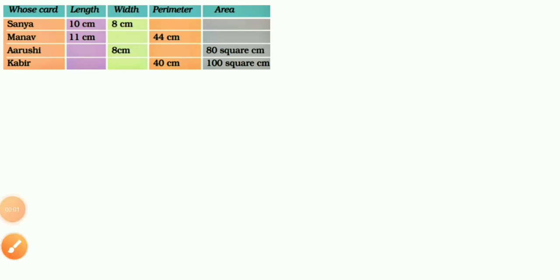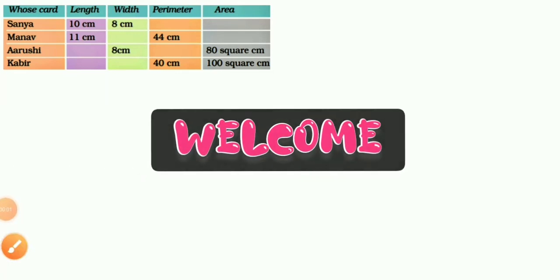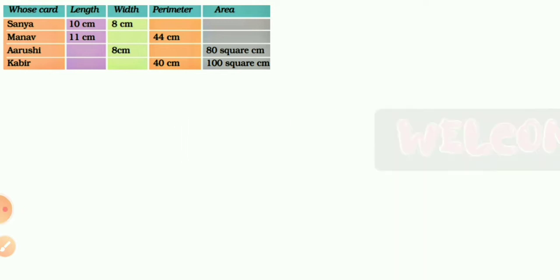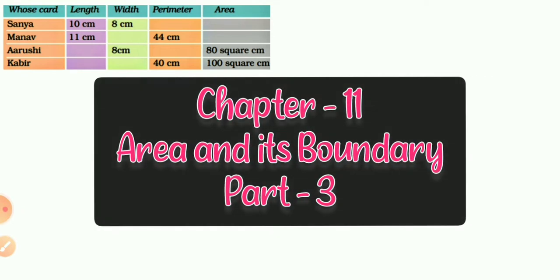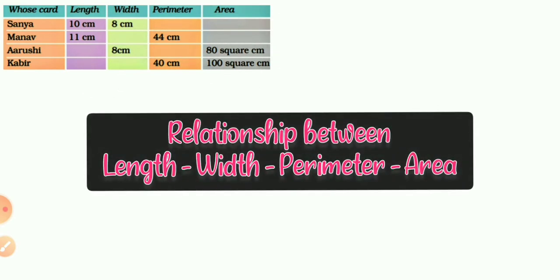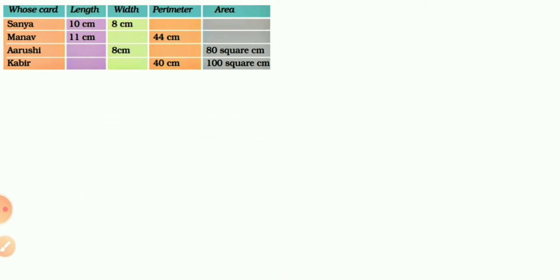Hello dear students and welcome to this online class video. This is the third part of chapter 11, Area and its Boundary, of Class 5 Mathematics. I am Jay Prakash. Today's topic is the relationship between length, width, perimeter and area.